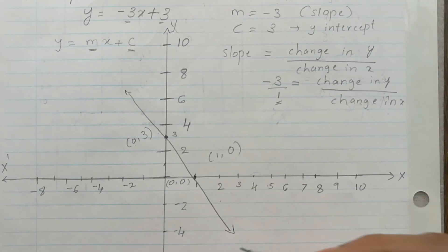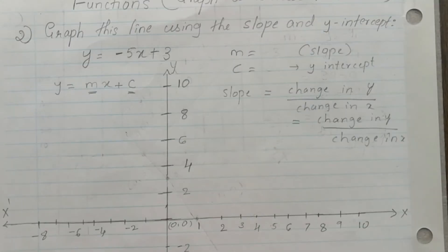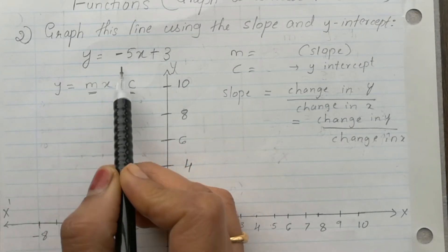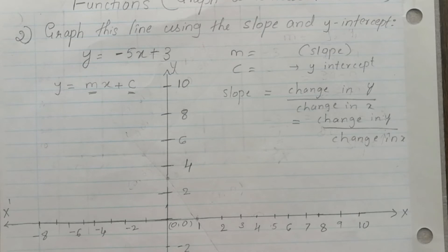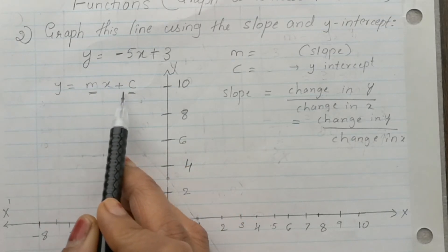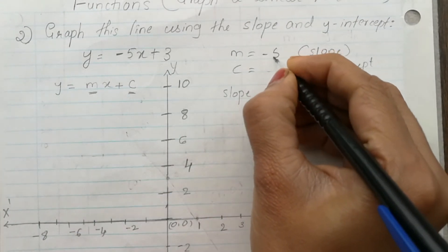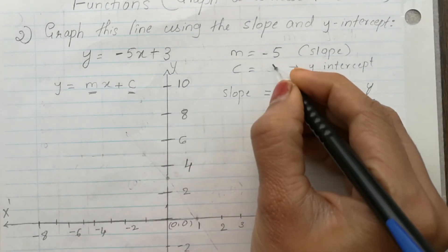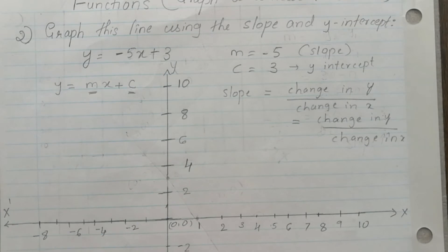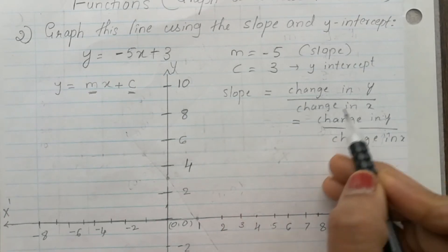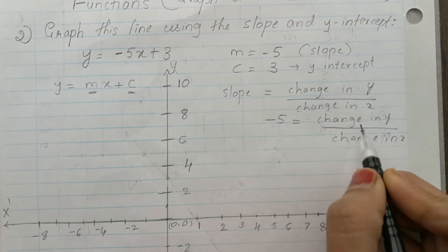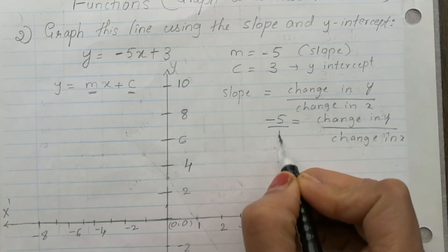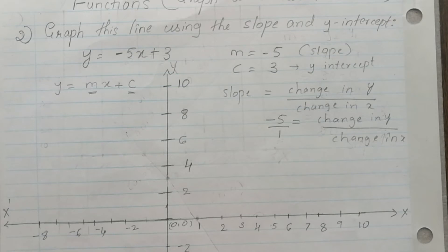Second problem: graph the line y is equal to negative 5x plus 3 using slope and y-intercept. Again compare the given line to the equation y is equal to mx plus c. Here m is negative 5, which is the slope, and c — the y-intercept — is 3. Slope is negative 5, which equals change in y over change in x, so negative 5 over 1, giving change in y as negative 5 and change in x as 1.